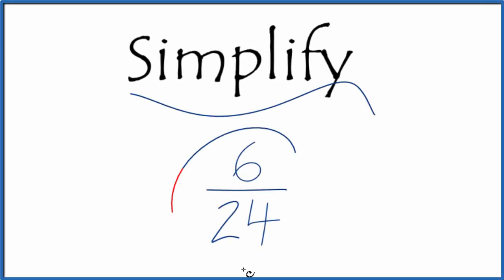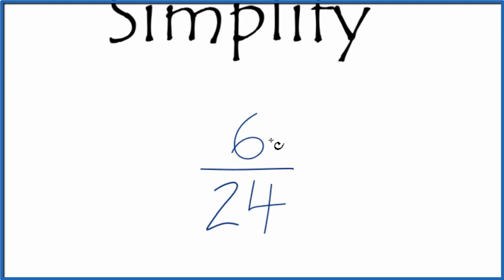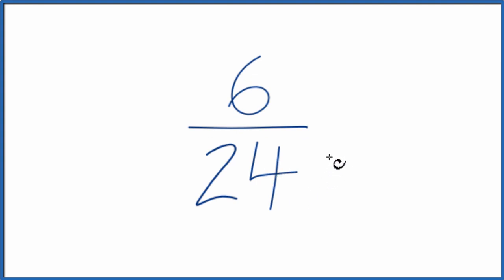Let's simplify the fraction 6/24. What we're trying to do is find another fraction that has the same value as 6 over 24, an equivalent fraction, reduced to its lowest form.